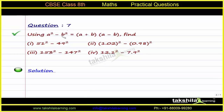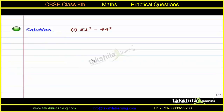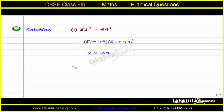Question number 7: Using the identity a squared minus b squared equals a plus b into a minus b, we have to find the values for four parts. In the first part, we evaluate 51 squared minus 49 squared. Using the formula, this becomes 51 minus 49 into 51 plus 49, which is 2 into 100, equal to 200.